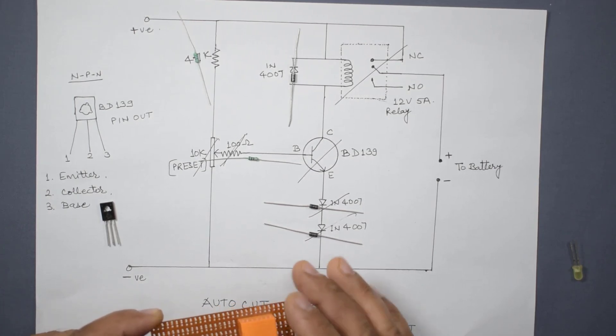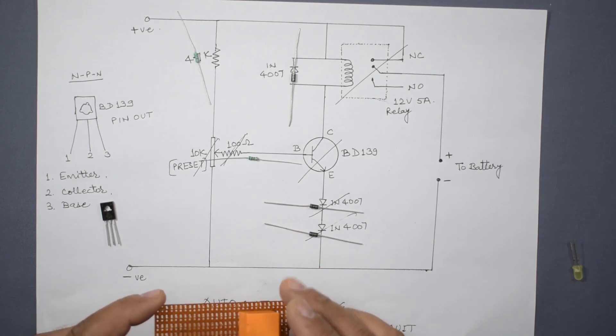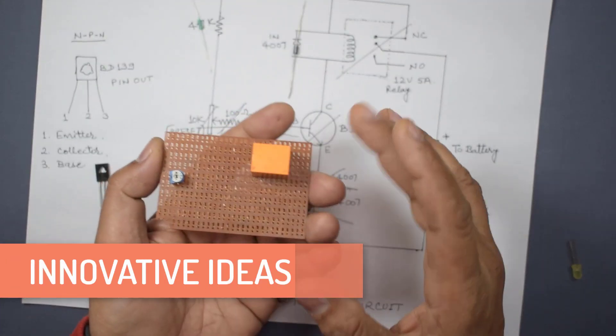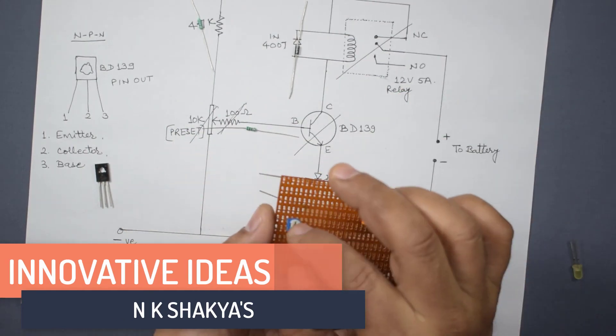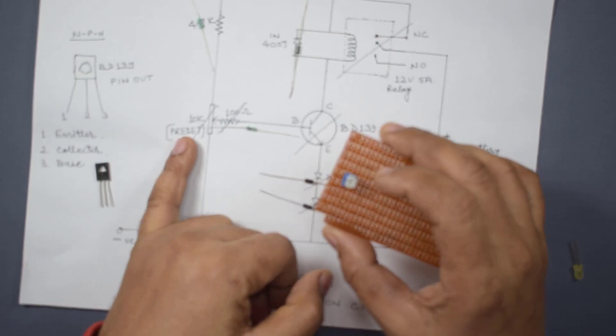On the zero PCB I have assembled one relay that is of 12 volt and one 10k preset.